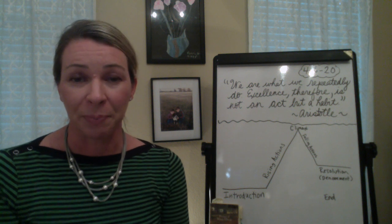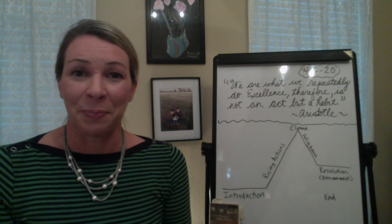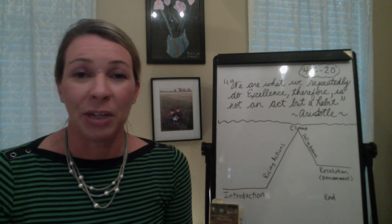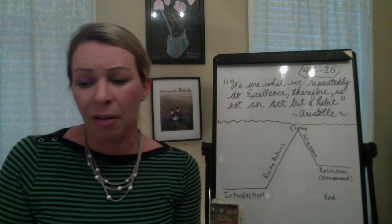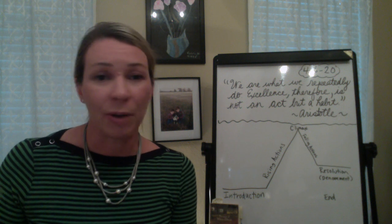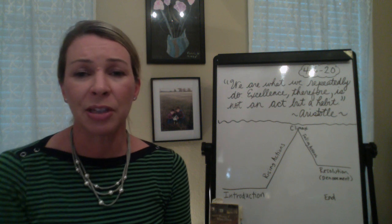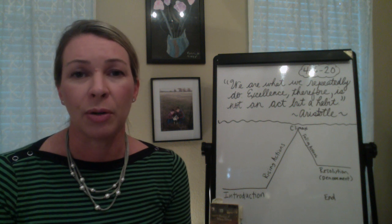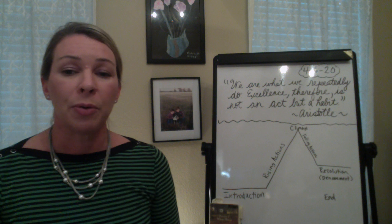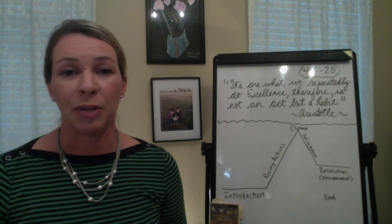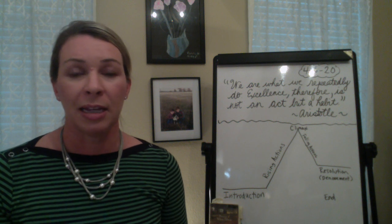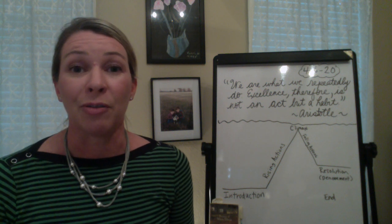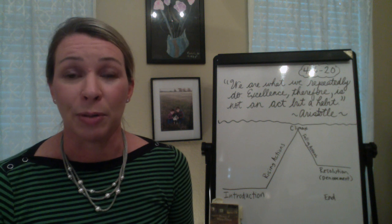Thank you for doing that. So today, what I'd like us to talk about is plot structure. We know we're inside of a fiction book and we are about halfway through with Charlotte's Web. The plot structure is there to help us follow along this fiction book. We will have an introduction, and we know the introduction was very exciting — it was when we were introduced to Mr. and Mrs. Arable and Fern, and Fern saved Wilbur. That was the introduction.